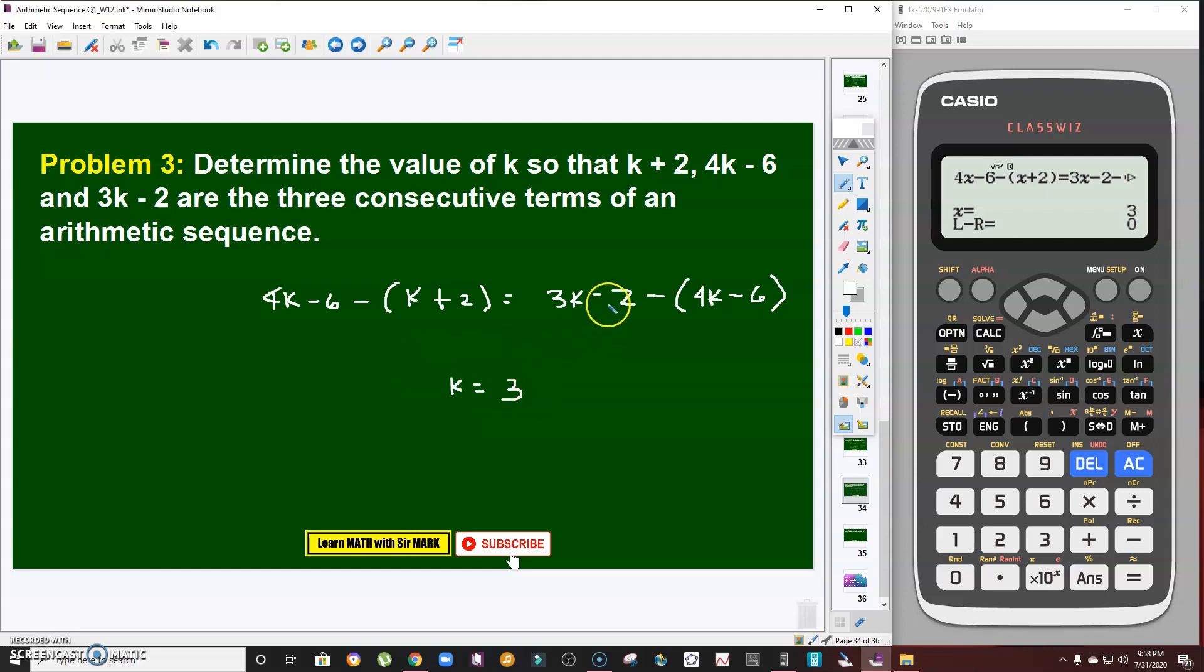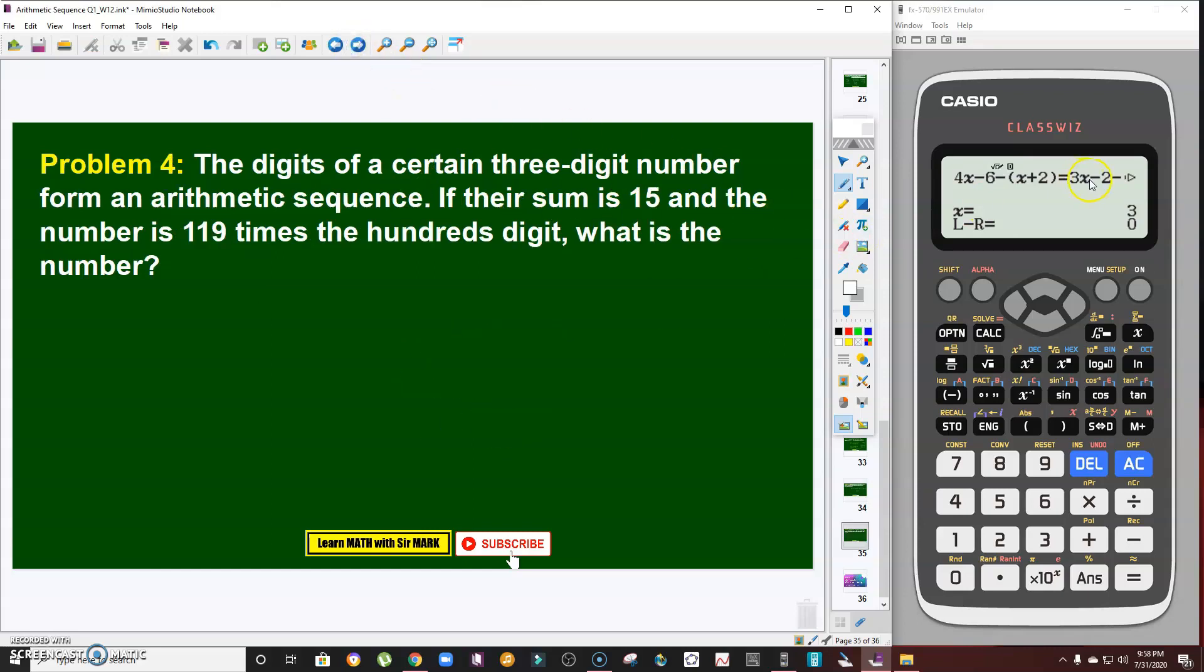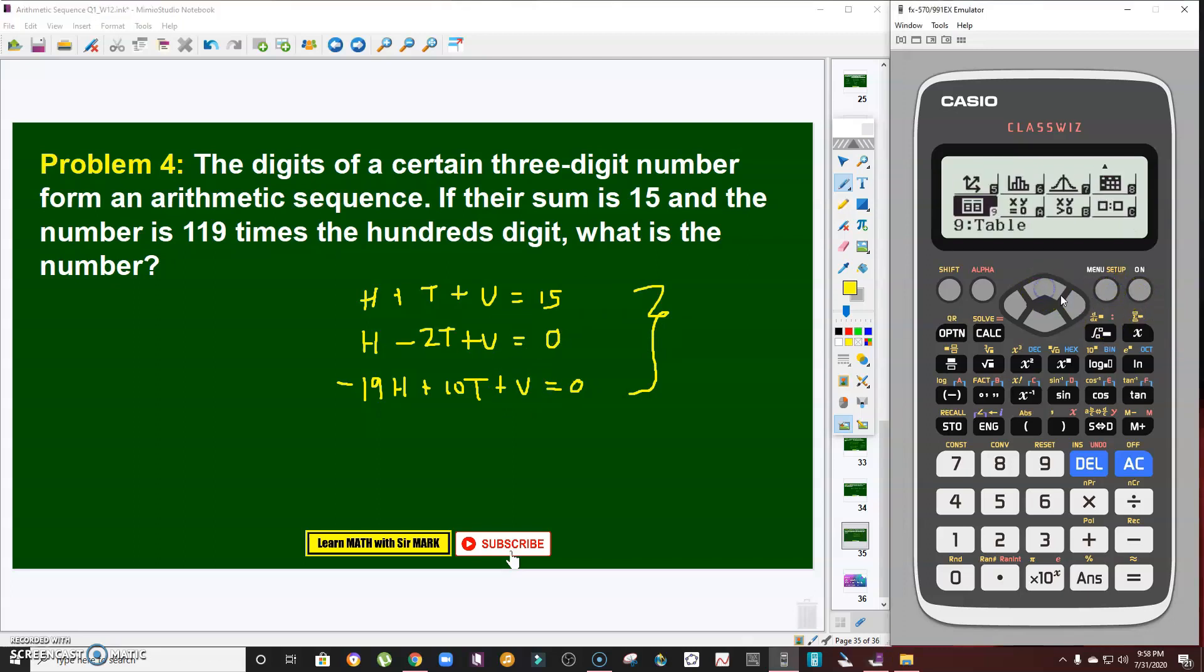Last problem. I've also solved this in the previous video. How do I solve it using calculator? To cut it short, the equations that will be generated here are: the sum of the digits is 15, since it's arithmetic, h - 2t + u equals 0, and then -19h + 10t + u equals 0. Those are the three equations that will be generated, and I showed that in the other video for the manual solution. This calculator can handle it.